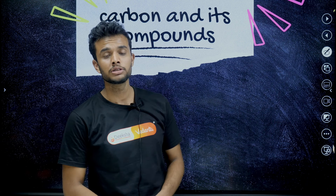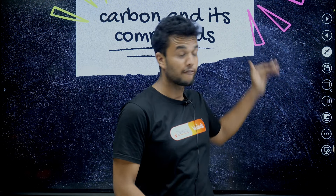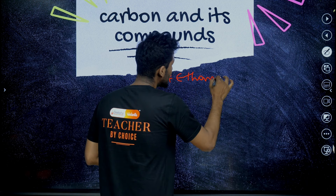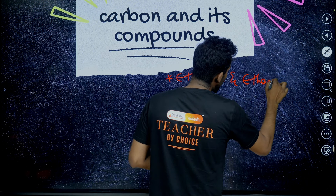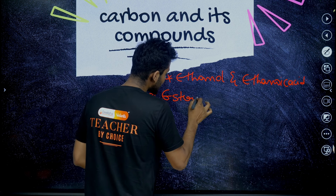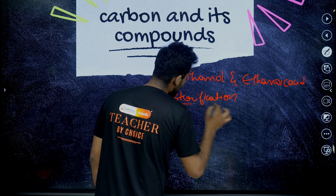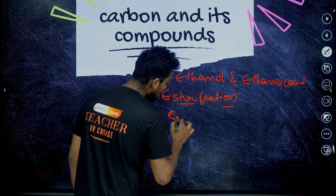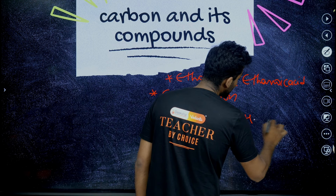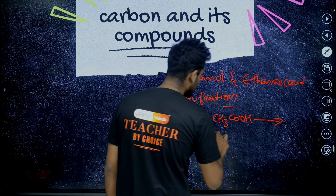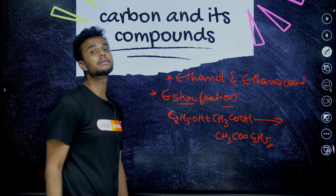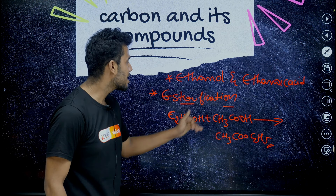The last important unit is carbon and its compounds. Overall marks from this unit focus on ethanol and ethanoic acid reactions. Especially the esterification reaction is very very important. Ethanol reacts with acetic acid (ethanoic acid) to yield an ester — a sweet-smelling compound — CH3COOC2H5. This is called an ester.